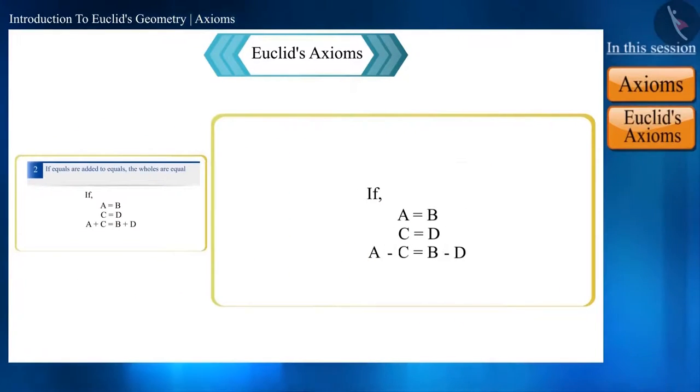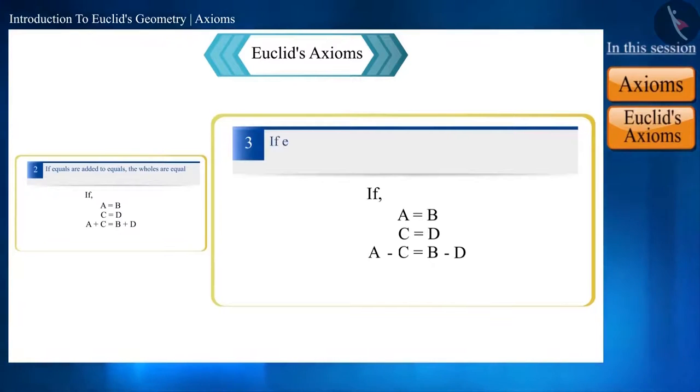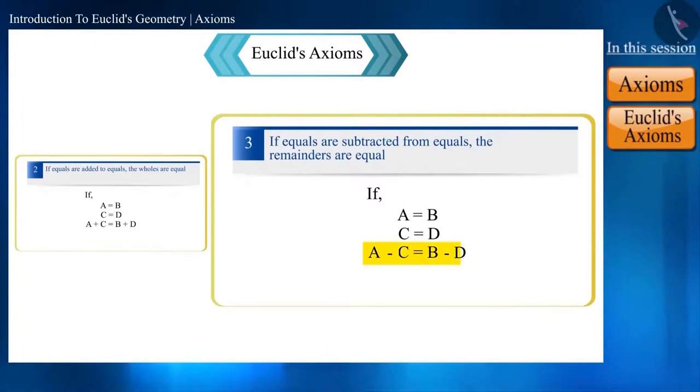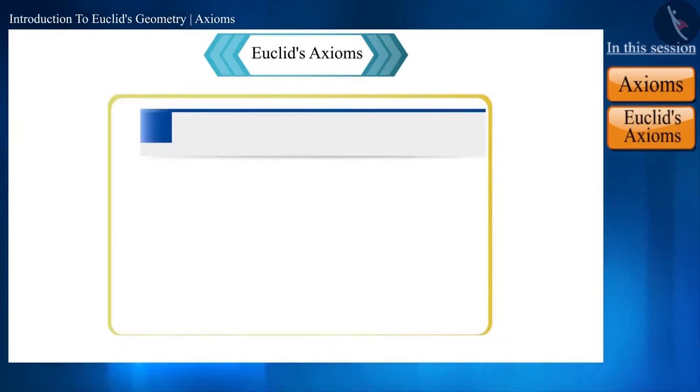If instead of adding it, what will happen if we subtract? Friends, think a little. Even then, will they be equal? Yes. According to Euclid's third axiom, if equals are subtracted from equals, the remainders are equal. That is, a minus c will be equal to b minus d.